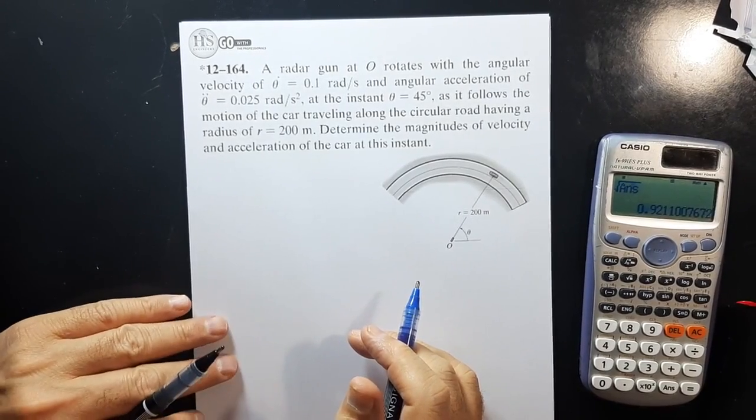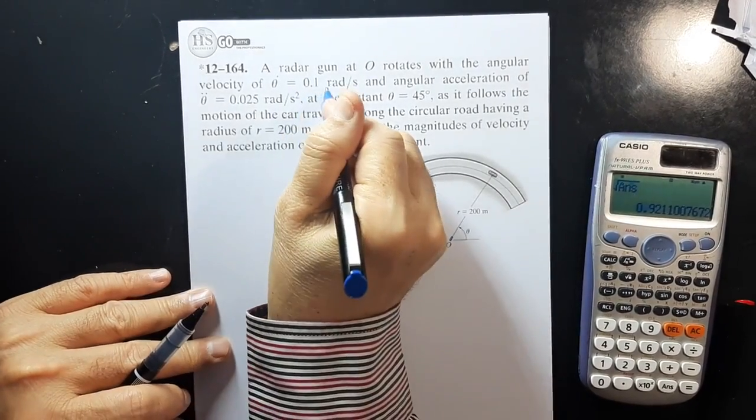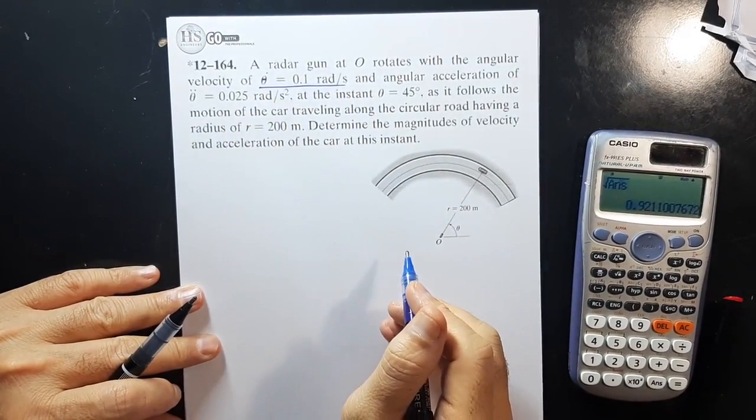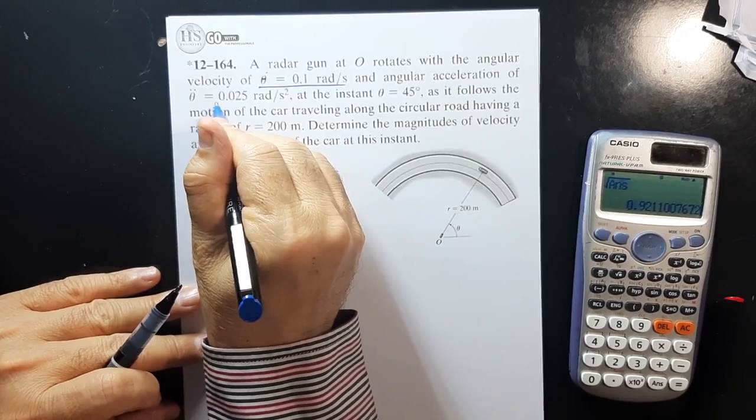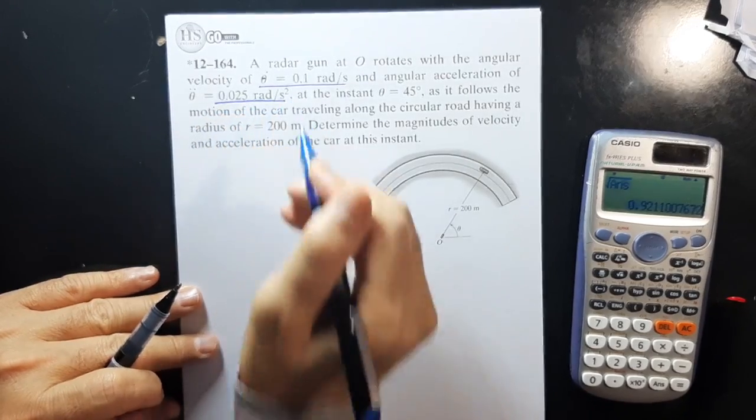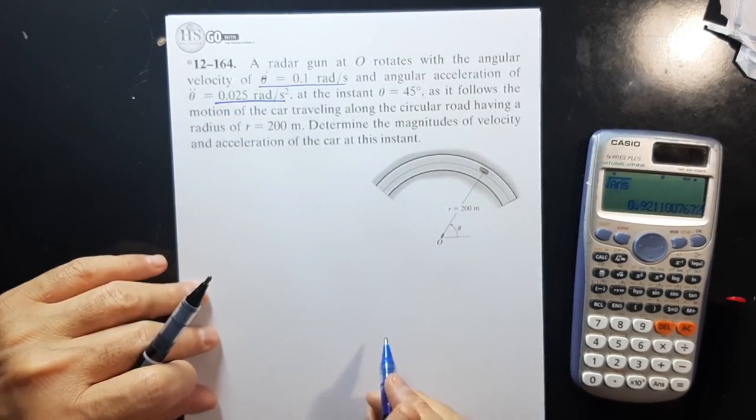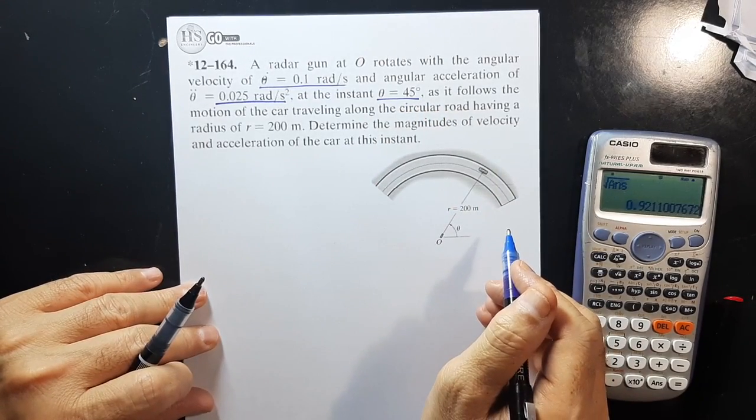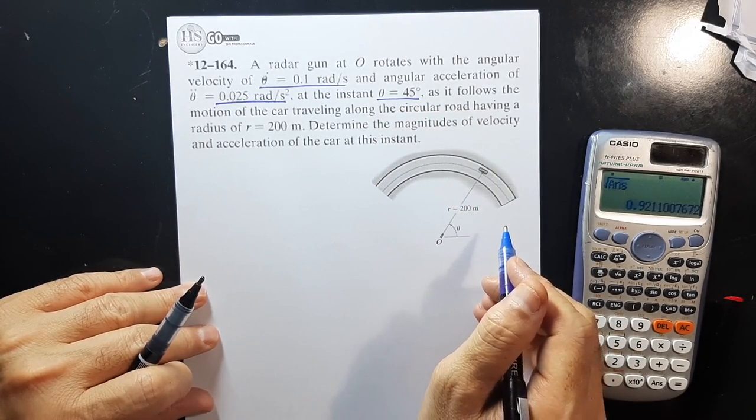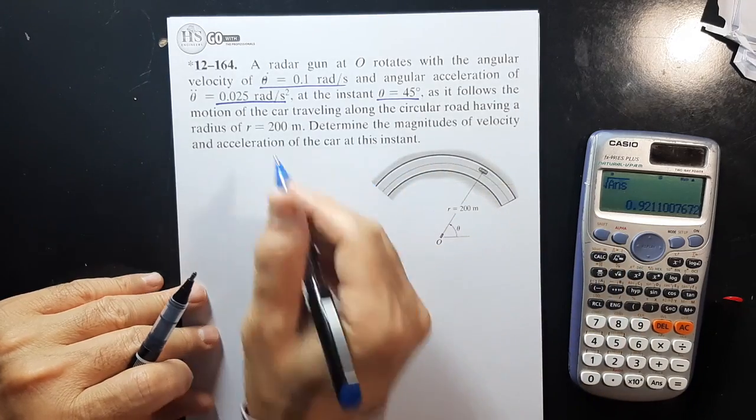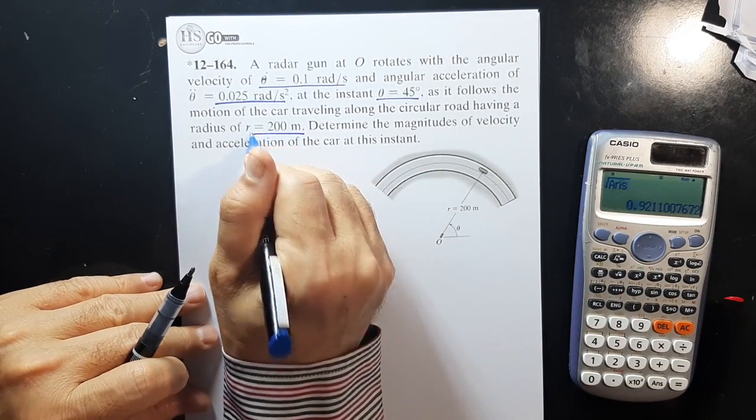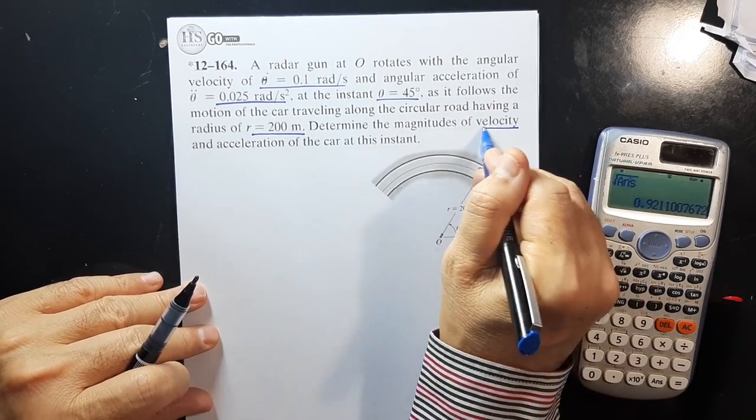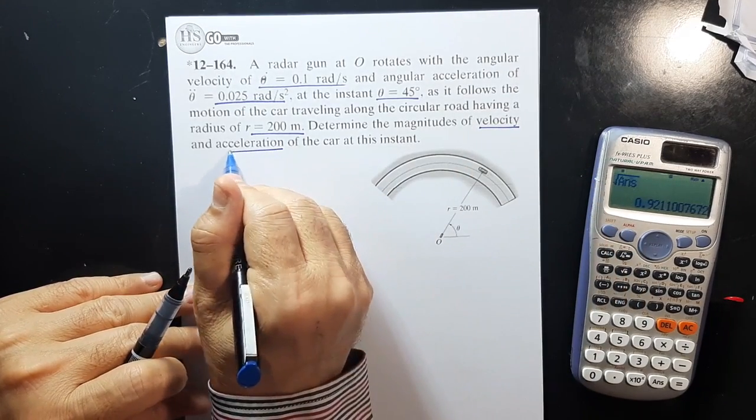A radar gun at O rotates with the angular velocity θ̇ = 0.1 rad per second and angular acceleration θ̈ = 0.025 rad per second squared at the instant θ = 45 degrees as it follows the motion of the car traveling along the circular road having a radius r = 200 meters. Determine the magnitude of velocity and the acceleration of the car.